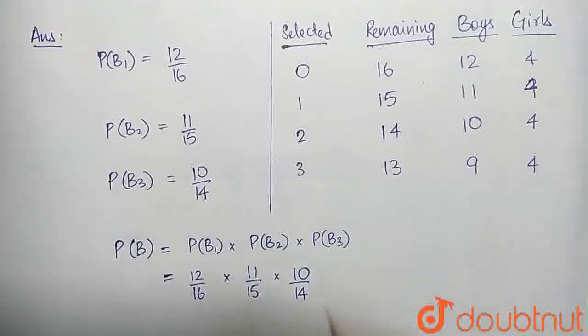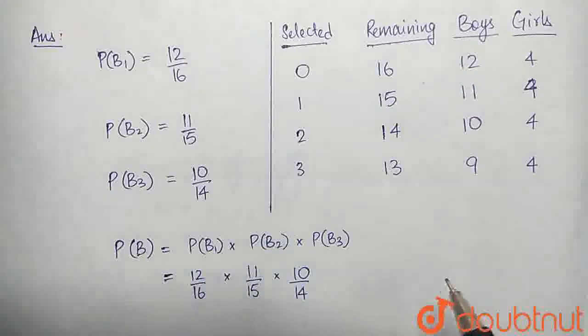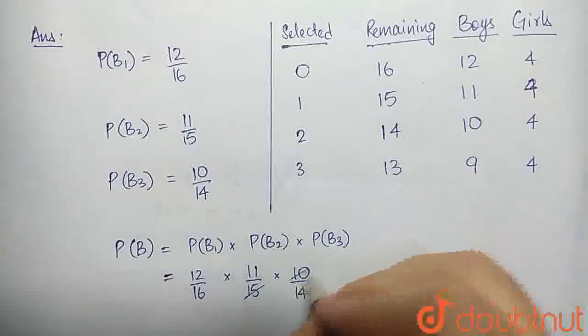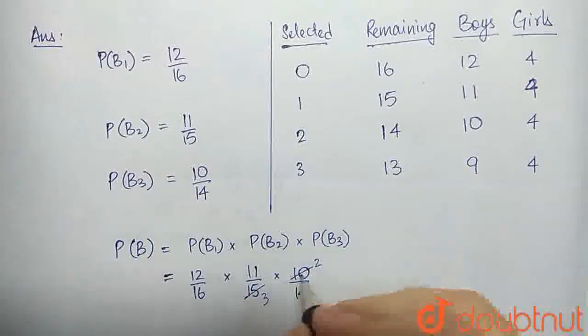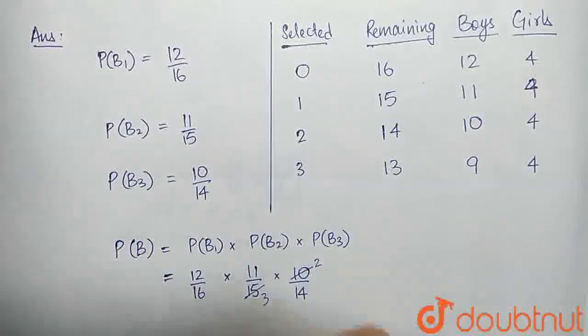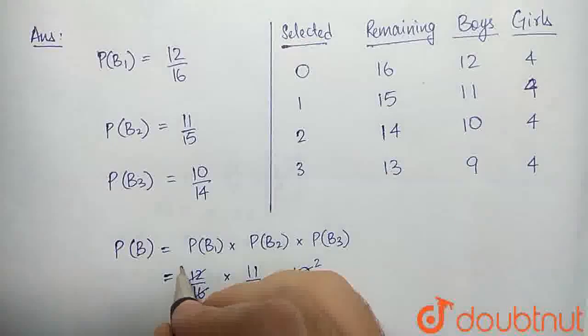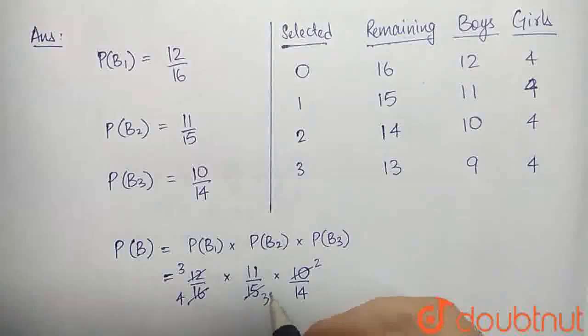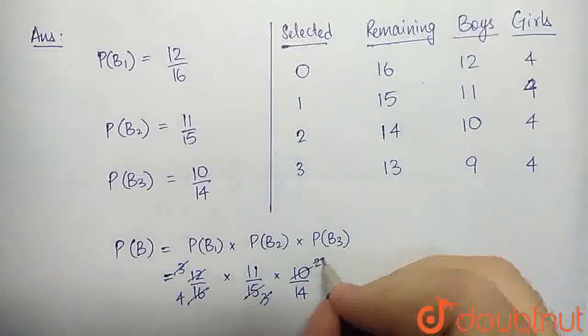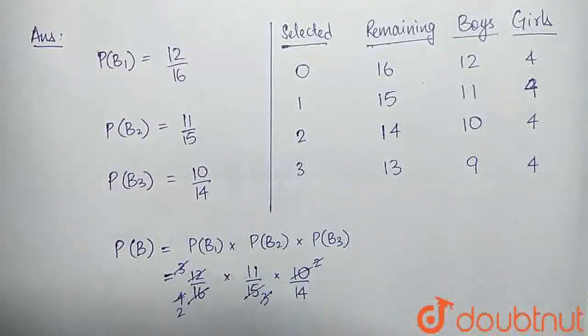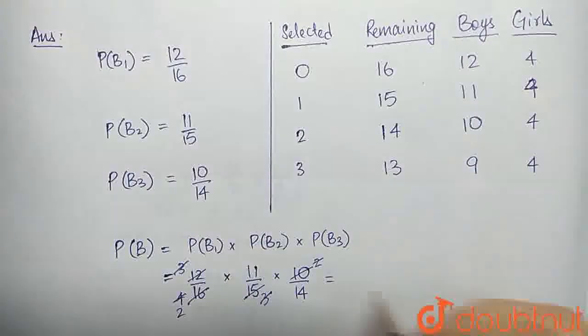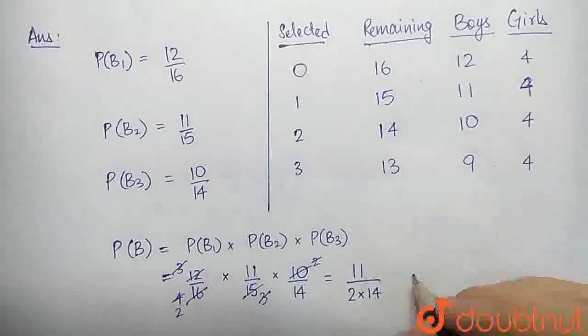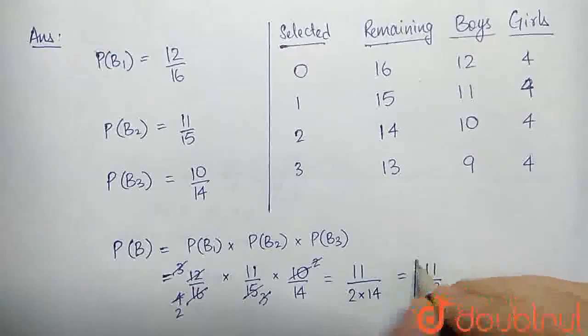Therefore, P(B) would be 12 by 16 into 11 by 15 into 10 by 14. Now, here I can either calculate by multiplying the numerators and denominators and finding out the products, or I can simplify. Simplifying, I get 2 and 3 here, 2 fives are 10, and 3 fives are 15, then 3 fours are 12, and 4 fours are 16. Now, 3 and 3 also get cancelled, and 2 and 4 also get cancelled. The remaining numbers we have are 11 in the numerator, and 2 times 14 in the denominator, therefore, the final probability is 11 by 28.